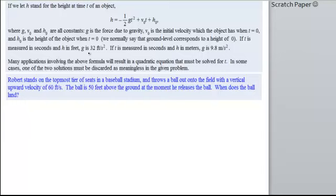If t is measured in seconds, and h in feet, g is 32 feet per second squared, or 32 feet per second per second. If t is measured in seconds, and h in meters, g is 9.8 meters per second squared. So, it depends on the information that you're given in the problem as to whether you use this g or this g. Okay, so just keep that in mind as you work problems like this.